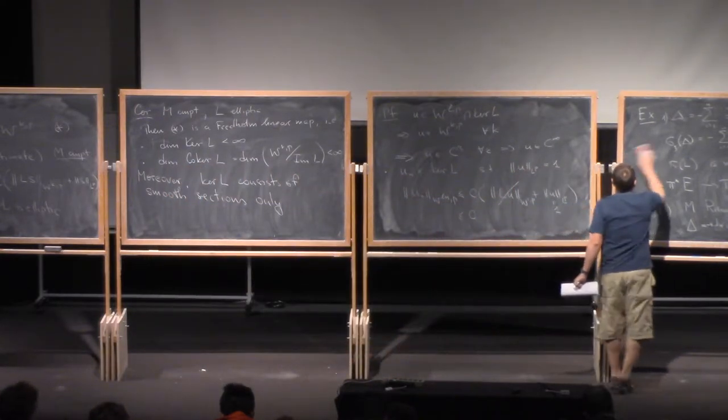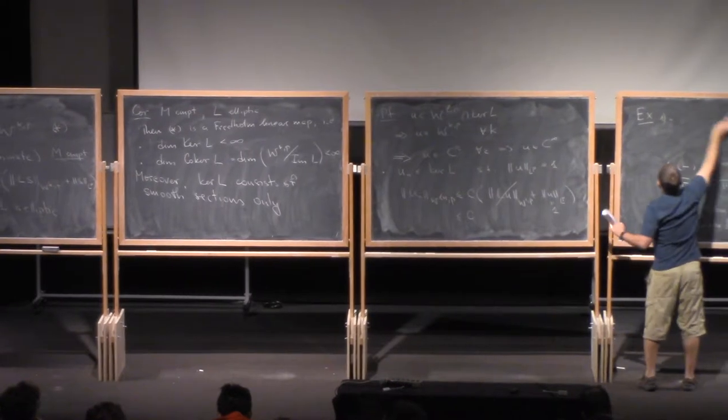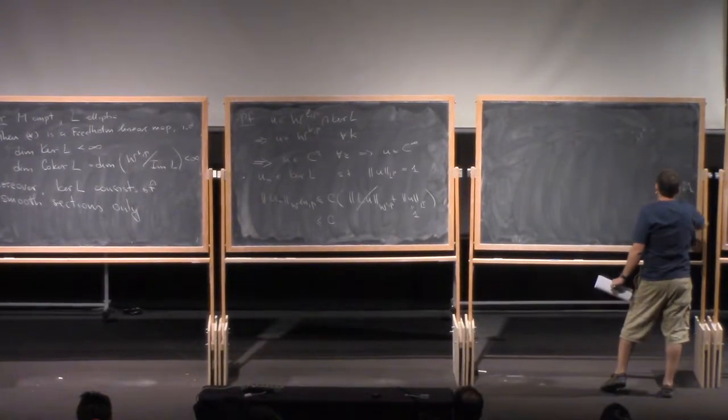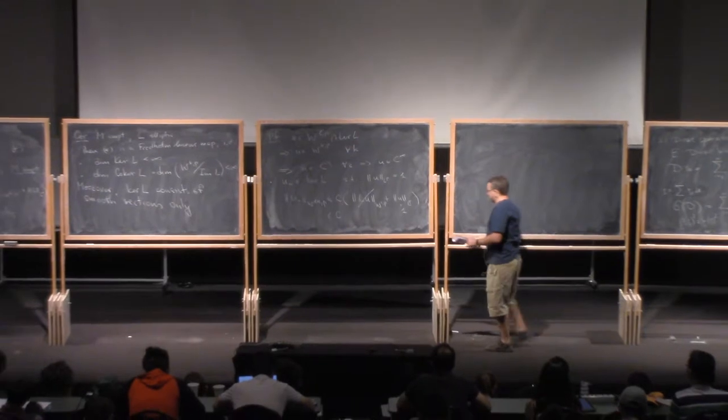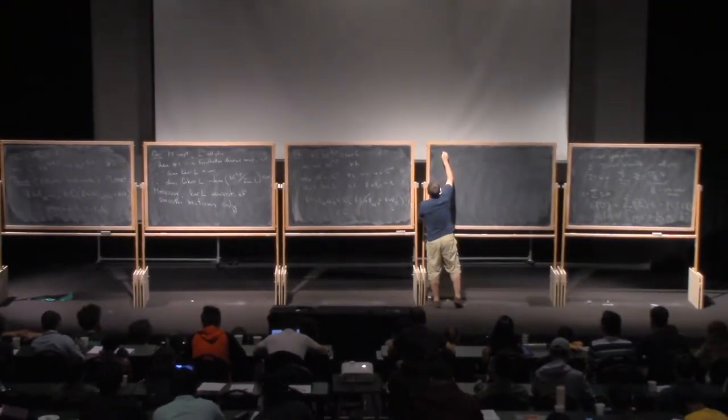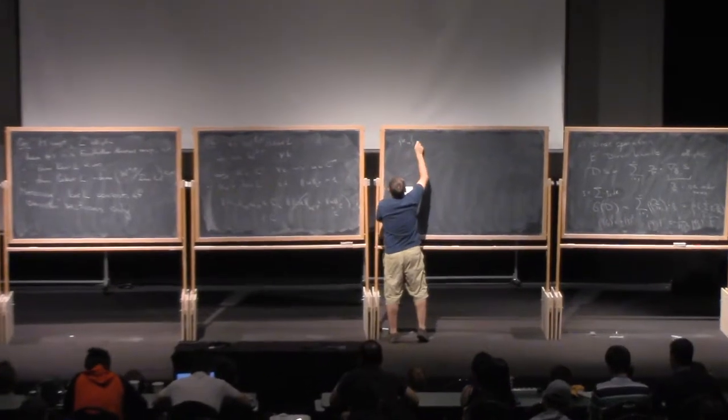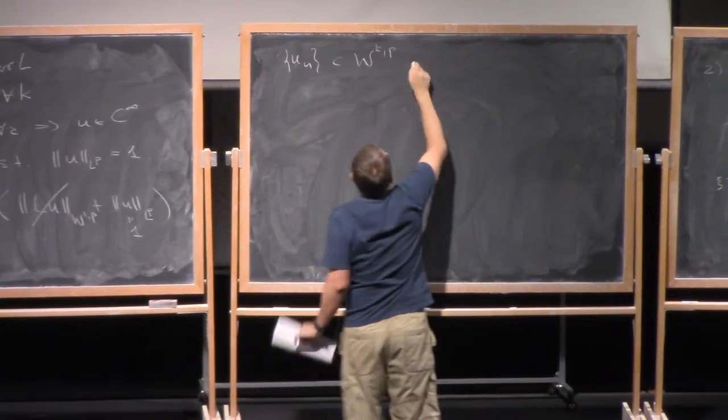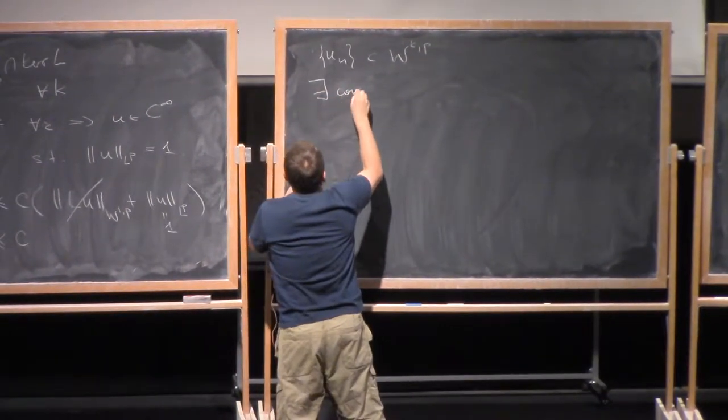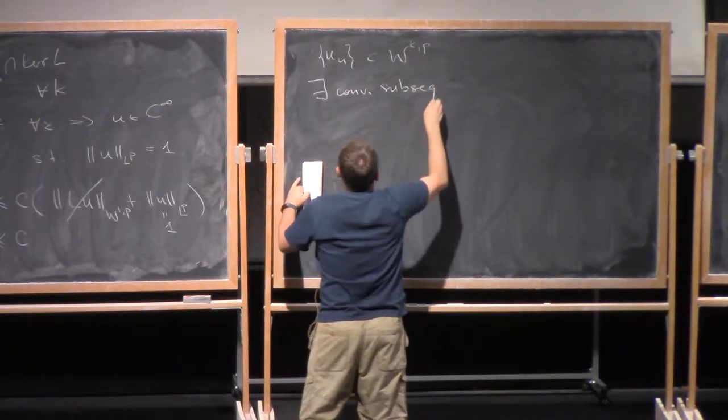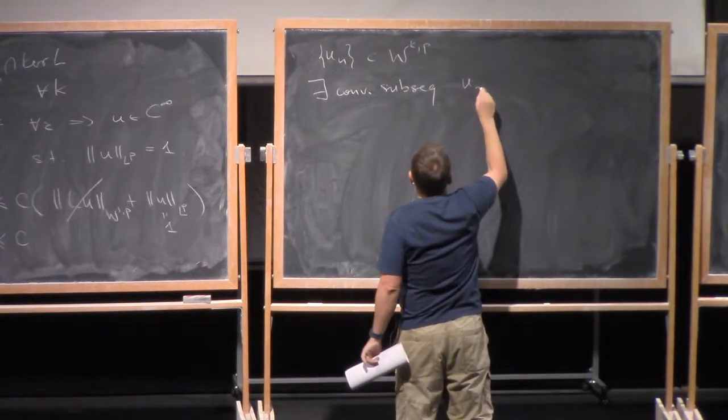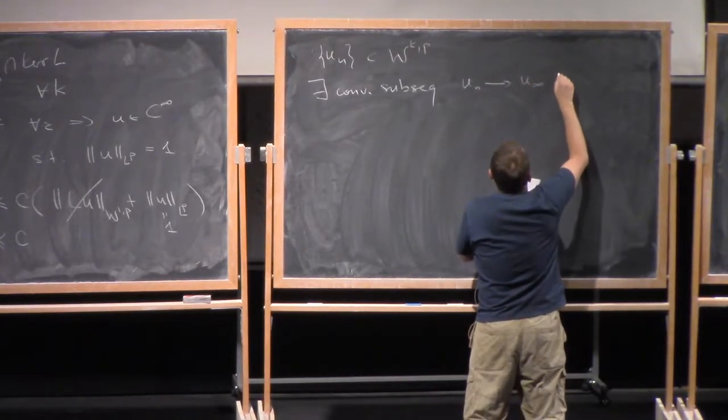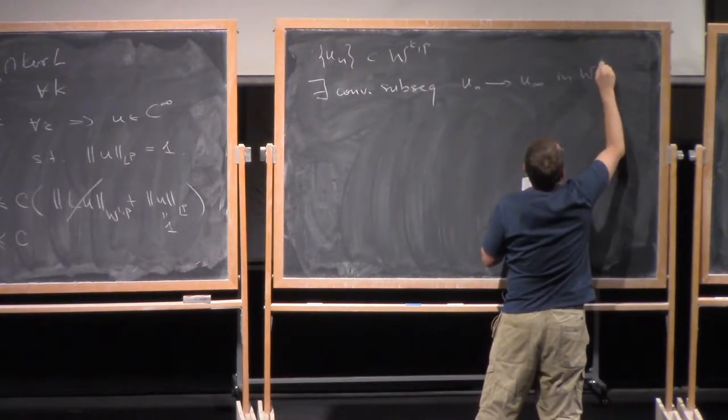But now I know that, because of the compactness of the embeddings of Sobolev spaces, the sequence un, viewed as a sequence in Wkp, is compact. That is, there is a convergent subsequence. I will still denote this by un, and this converges strongly to some u infinity in Wlp.